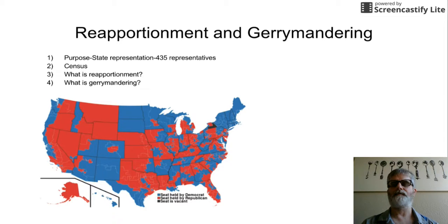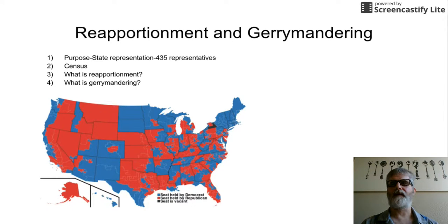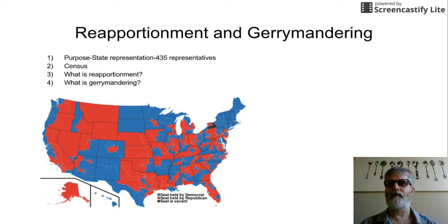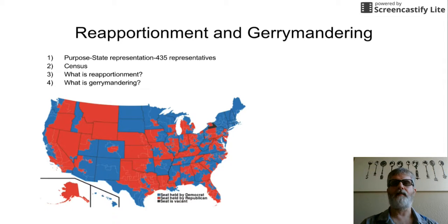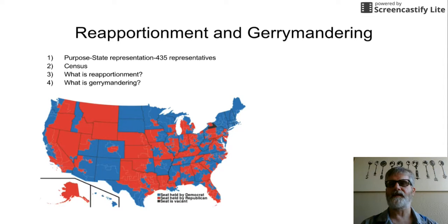In the last 2010 census, Arizona gained one representative, so we now have nine representatives in Congress, plus two senators for a total of 11. Some states gain more, some might lose some — we just move them around. That's reapportionment: moving around the representatives, increasing, decreasing, or staying the same based on the census every 10 years.